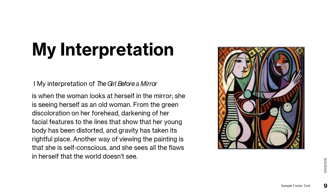So my interpretation of the Girl Before a Mirror is when the woman looks at herself in the mirror, she is seeing herself as an old woman — from the green discoloration on her forehead, darkening of her facial features, to the lines that show that her young body has been distorted and gravity has taken its rightful place. Another way of viewing the painting is that she is self-conscious and sees all the flaws in herself that the world doesn't see.